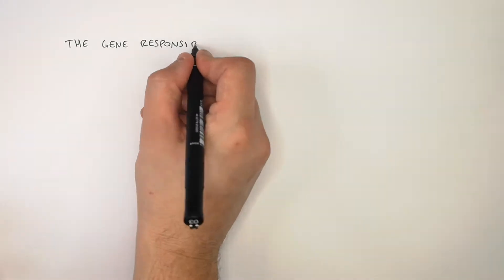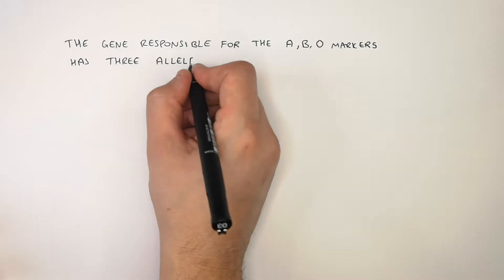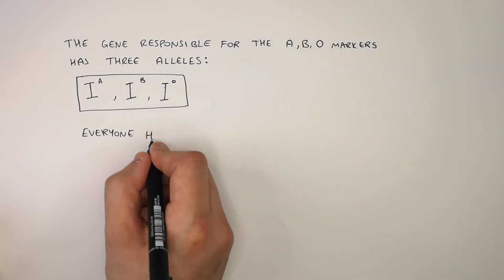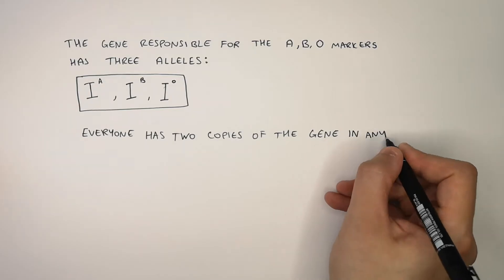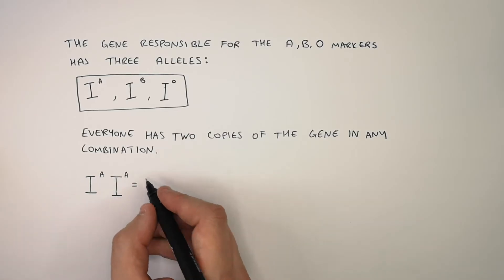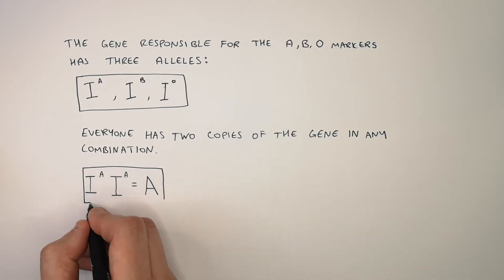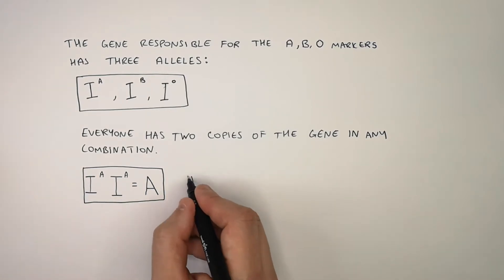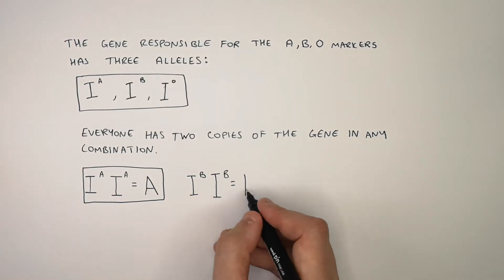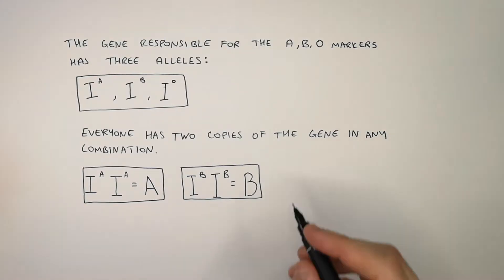The gene responsible for the A, B, and O markers has three alleles: IA, IB, and IO. Everyone has two copies of the allele in any combination. If you have IA and IA, that means you have blood group A — IA, IA is homozygous because the alleles are the same. If you have IB and IB, that means you have blood group B — IB, IB is also homozygous because the alleles are the same.